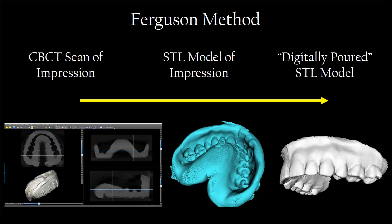This is the Ferguson method, developed by Dr. Rick Ferguson — it's a really sharp technique. What we start with is a cone beam scan of an impression. We'll open the DICOMs in the Blue Sky Bio planning software, digitize it, and turn it into an STL model of the impression. The unique thing is that we can then digitally pour that STL model and create basically the same thing you'd get if you poured an impression — a very accurate STL model you can use in the implant planning process.